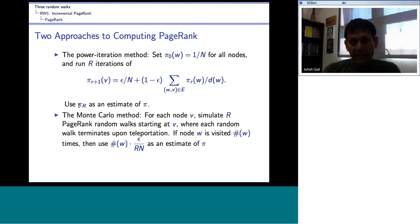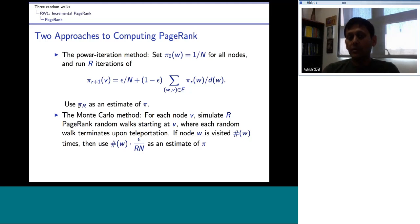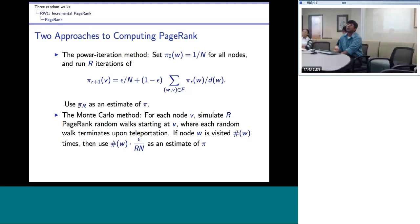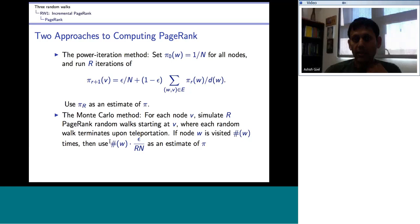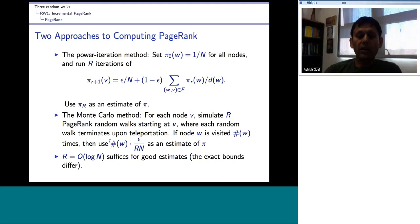In the Monte Carlo method, each random walk lives for geometric time with mean 1/epsilon, and we do R walks starting at every node, so the total number of steps in expectation is R*N/epsilon. We normalize by epsilon/R so that the pi values sum to 1. R = O(log N) suffices for a good estimate, though the exact bounds differ between power iteration and Monte Carlo.